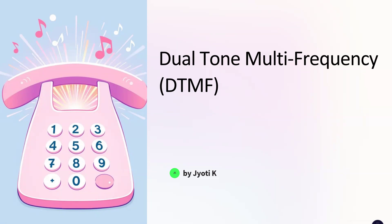Dual-tone multi-frequency, DTMF, is a signaling system which is used in landline and mobile telephony to represent digits like zero to nine, as well as special characters like star or pound. DTMF also allows users to interact with phone systems and automated services by pressing keys on their phone keypads, enabling features like call routing, menu navigation, and secure access to sensitive information.